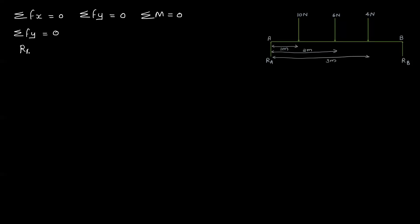That is RA plus RB minus 20 equal to 0. So RA plus RB equal to 20.